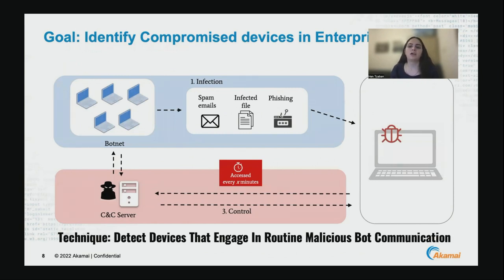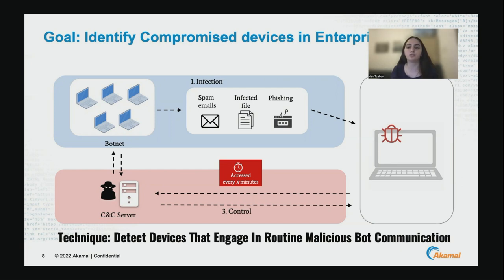We're talking here about a common attack chain that starts with infection — malware is being downloaded and executed on an enterprise device. It can come from spam, an infected file, phishing, or anything else. The device is then compromised and joins as a bot to a botnet that is controlled by a remote attacker. Once the device has been infected and joined to the botnet, there is sometimes a periodic routine communication between the device and the remote attacker, all happening through a command and control channel. In such a communication, the attacker can orchestrate a variety of malicious acts — it can be DDoS, ransomware, or data exfiltration. We're interested in identifying these bots that are engaging in routine malicious communication to hostnames, even legitimate hostnames.